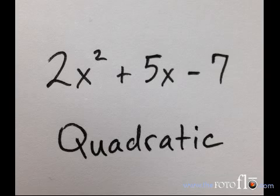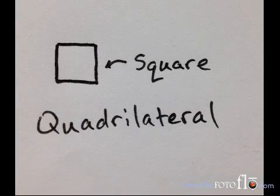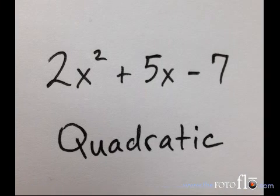Because this expression has x squared as its highest variable power, it can be called quadratic. A square is a quadrilateral. A polynomial with x squared is quadratic.